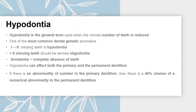Hypodontia is the general term used when you encounter a reduced number of teeth. It is one of the most common dental genetic anomalies. If a child has one up to six missing teeth, the correct term is hypodontia. If more than six teeth are missing, the correct term is oligodontia. If there is completely absent dentition, anodontia is the correct term. Hypodontia can affect both primary and permanent dentition. Studies show that if there is a numerical abnormality in the primary dentition, there is a 40% chance of numerical abnormality in the permanent dentition as well.